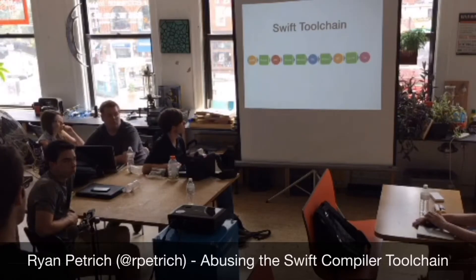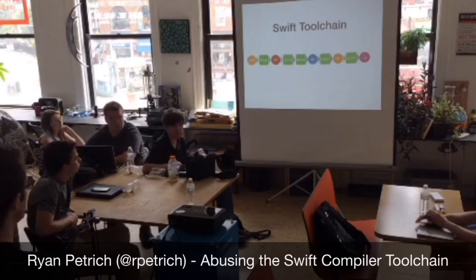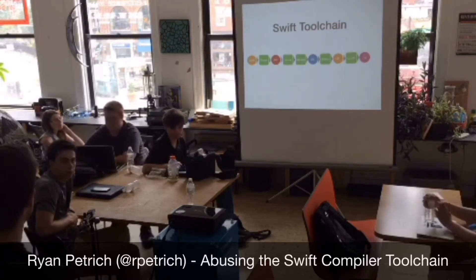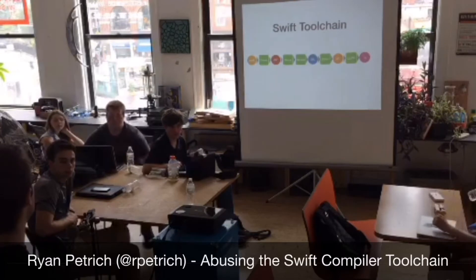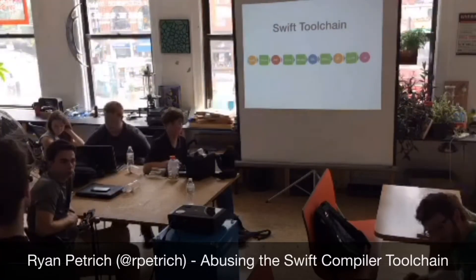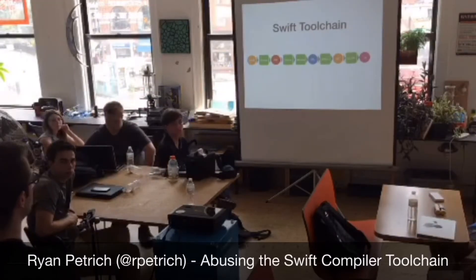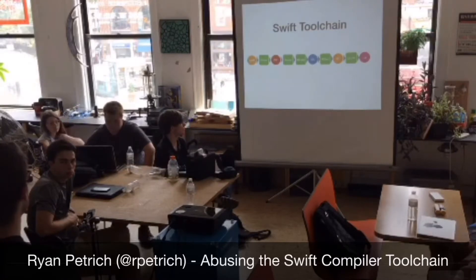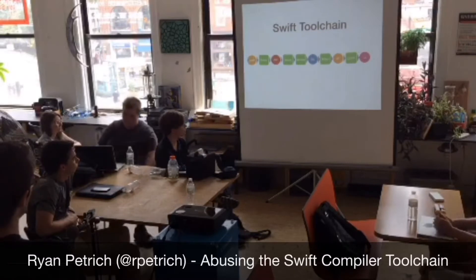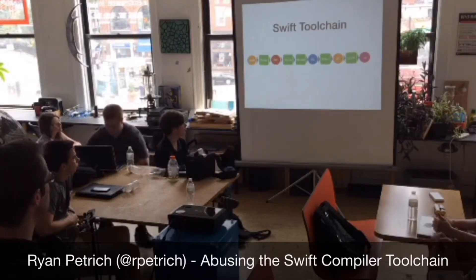From there, it'll take that AST and do semantic analysis on the code. It'll do type checking — figure out, for example, if you've added an int to a double, what operation is it going to actually perform. That basically checks your AST to make sure that everything is correct. If there are any errors, it will show you that there's something in your source code you need to resolve.